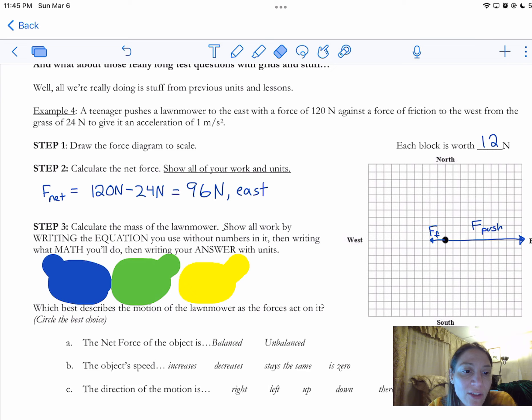Step three says calculate the mass of the lawnmower, and there's those directions. We've got to show the equation. We've got to write down our work, and then we've got to put an answer down. I'm looking for mass. That was the same as example three, so there's my equation right here. Mass is F net divided by A. The net force I just calculated was 96, and it told me back up in the problem right up here that I'm looking for one meter per second squared for the acceleration, so that's what I stuck on the bottom.